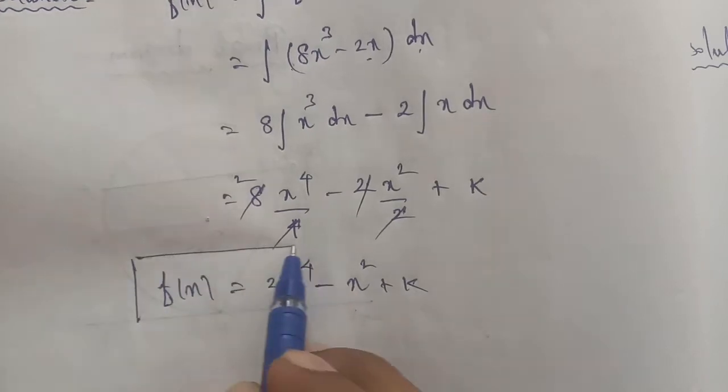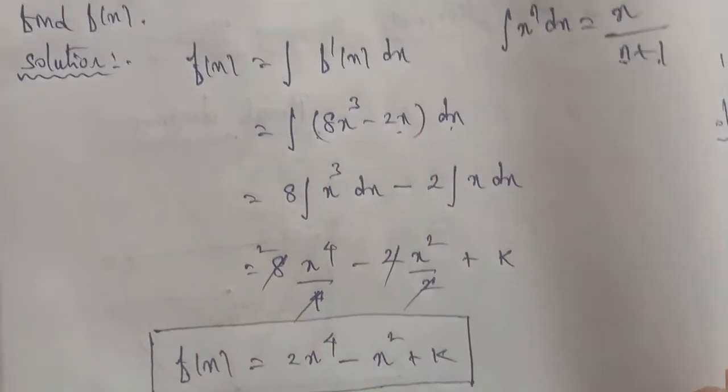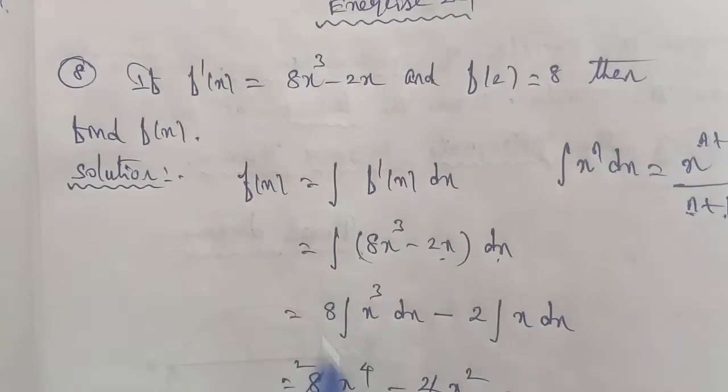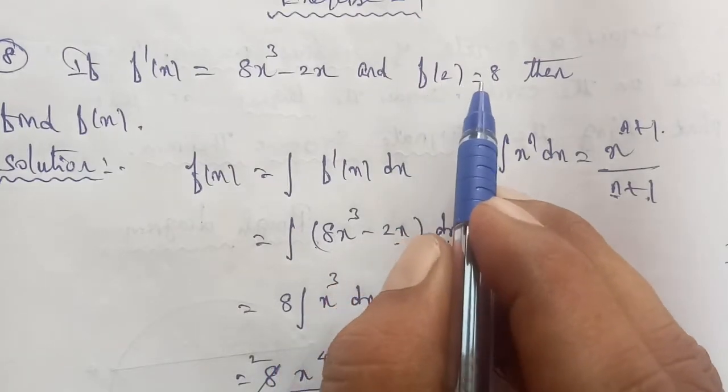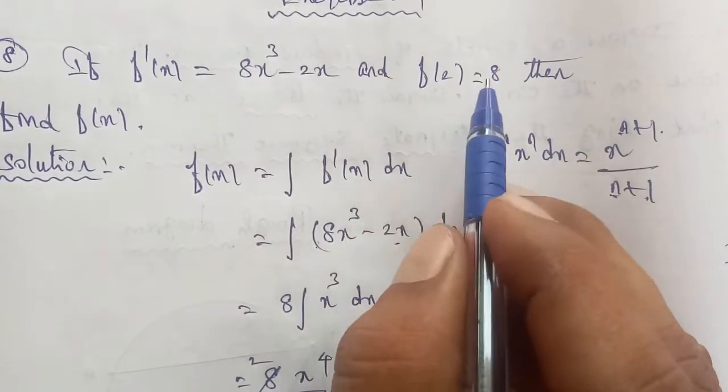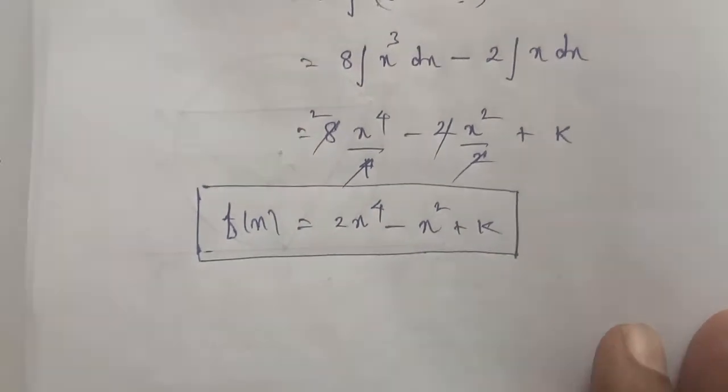This is the answer for f(x), but observe the given question: we need to find the exact f(x), and we're given that f(2) = 8. We use this condition to find k.